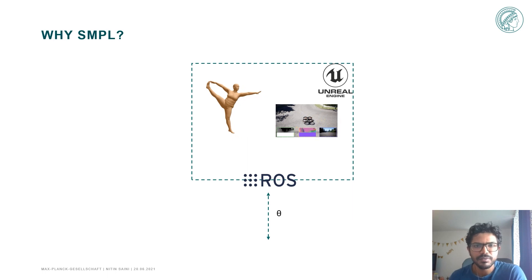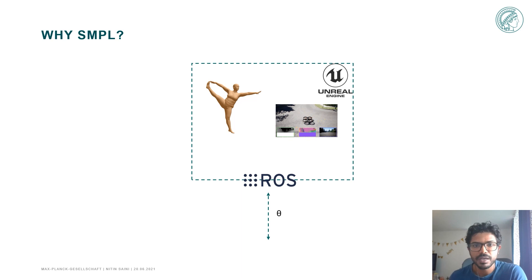A question arises: why use SMPL? Why not put a scanned avatar and stream the vertex displacements into the engine? The reason is we use ROS for communication between different modules. If we have to put an avatar in the scene we need to stream thousands of vertices every 1/60th of a second, which is not feasible, especially if different modules are running on different systems and communication is happening over the network. So instead we use SMPL, stream just the pose parameters, and calculate the vertices on the Unreal side.